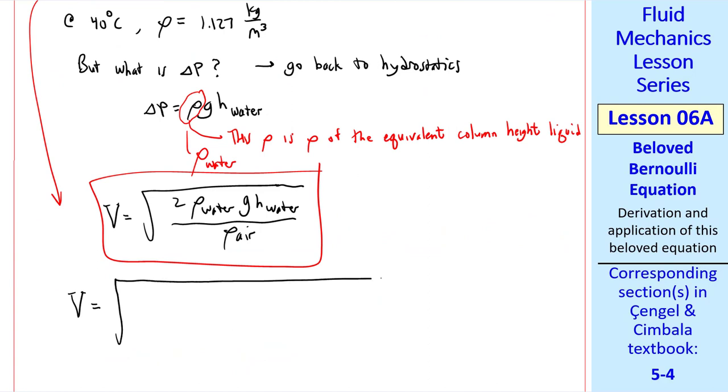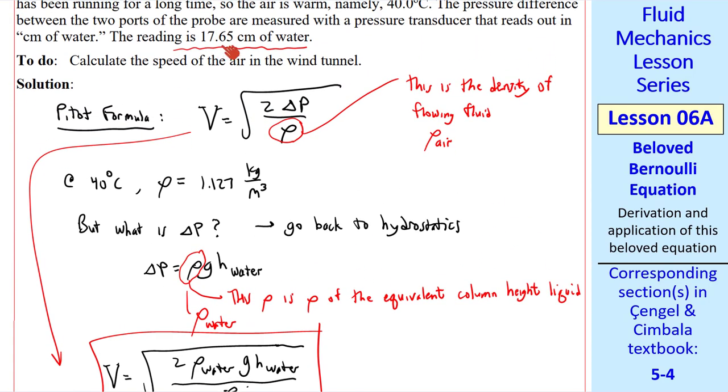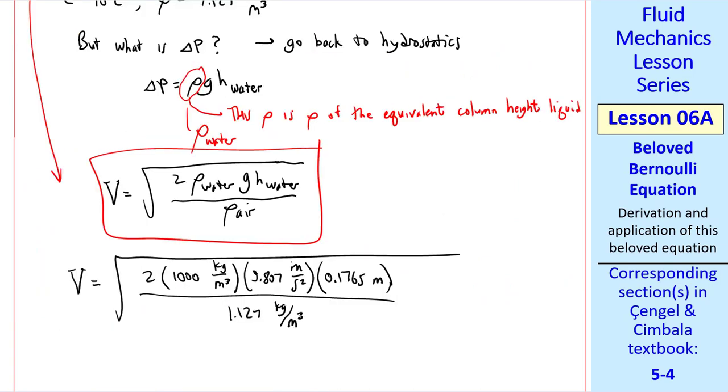These pressure transducers assume that the density of the water is 1,000 kg per meter cubed, g, and then our reading, which I converted from centimeters of water to meters of water, divided by ρ of the air. We see kg per meter cubed on both the numerator and denominator.